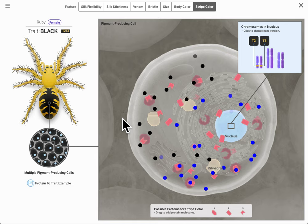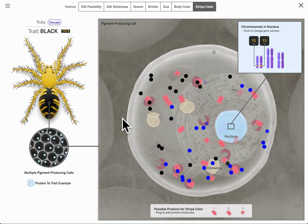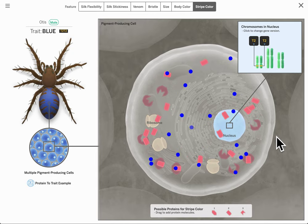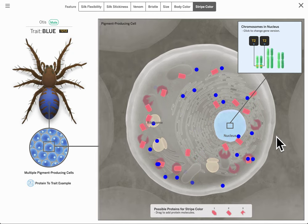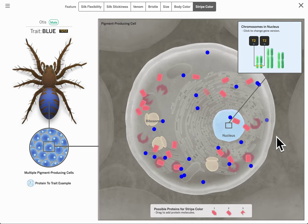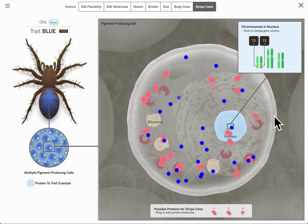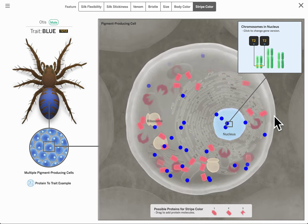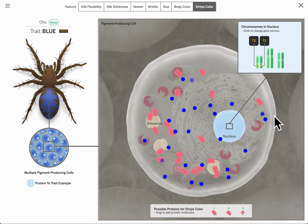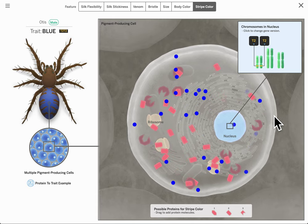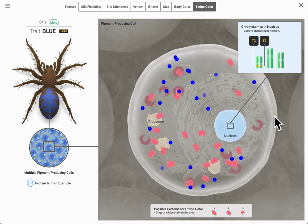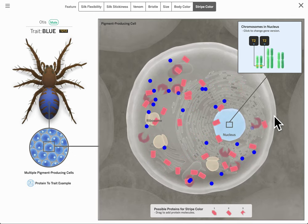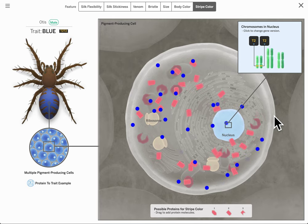We can play around with what genes each of these spiders can have. Now in real life we can't just switch out a gene because every cell has a set of genes or alleles for those genes, so we can't do this in real life but in a simulation we can.